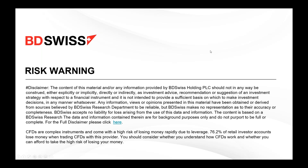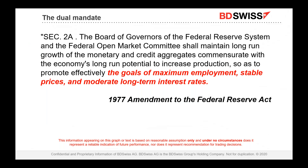Let's first discuss what the Fed's job is. The Fed's job is set by its dual mandate, laid out in an amendment to the Federal Reserve Act. They are required to aim for the goals of maximum employment, stable prices, and moderate long-term interest rates. It's called the dual mandate because people assume that maximum employment and stable prices will automatically produce moderate long-term rates.